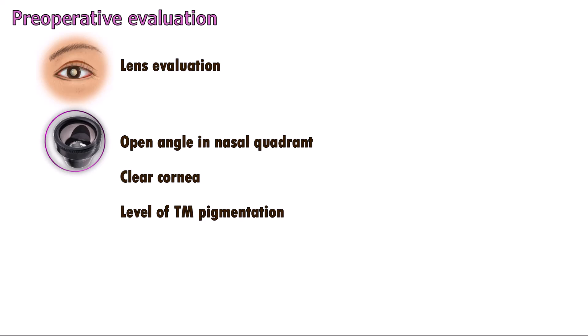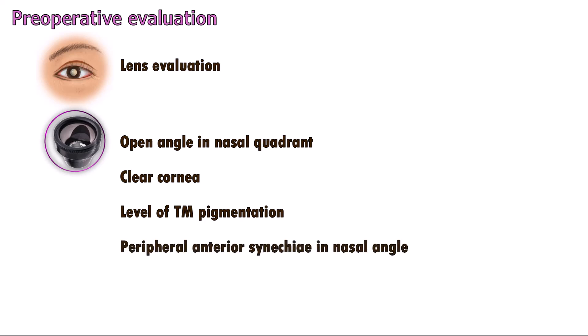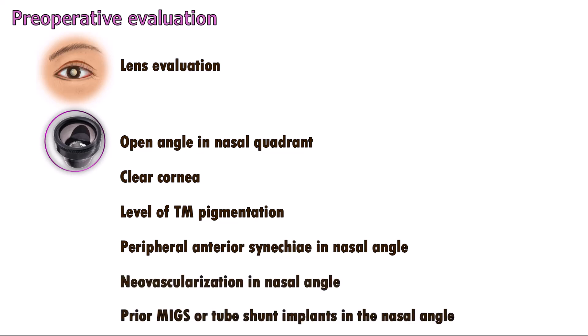The level of trabecular meshwork pigmentation should be noted. A lightly pigmented trabecular meshwork can be stained with trypan blue for better visualization. Other things to look for are peripheral anterior synechiae in the nasal angle, neovascularization in the nasal angle, and prior MIGS or tube shunt implants in the nasal angle, all of which could preclude the procedure.